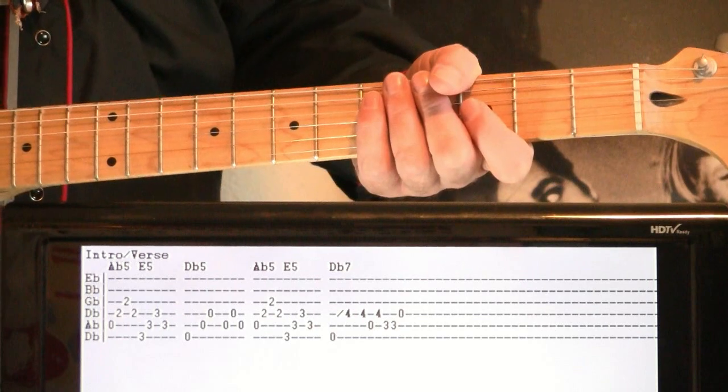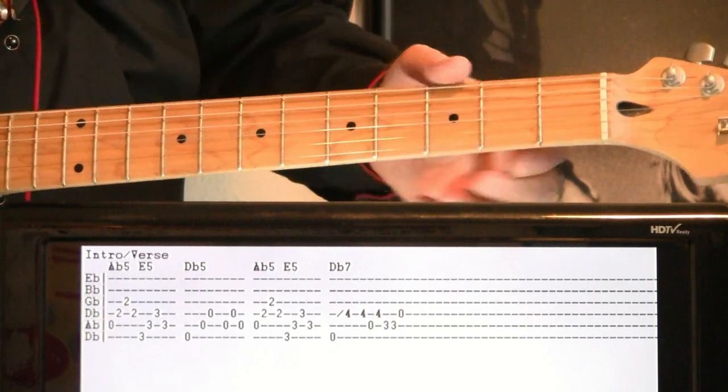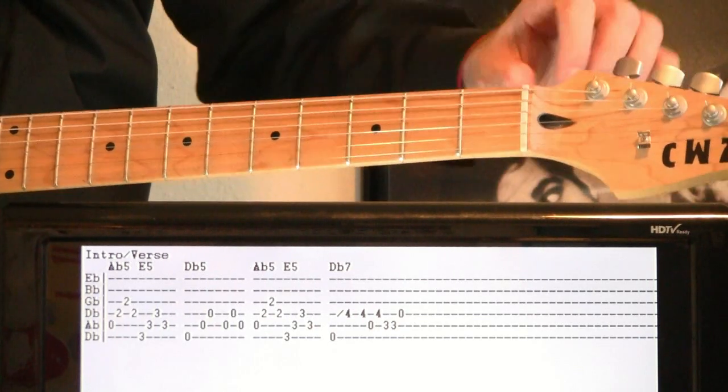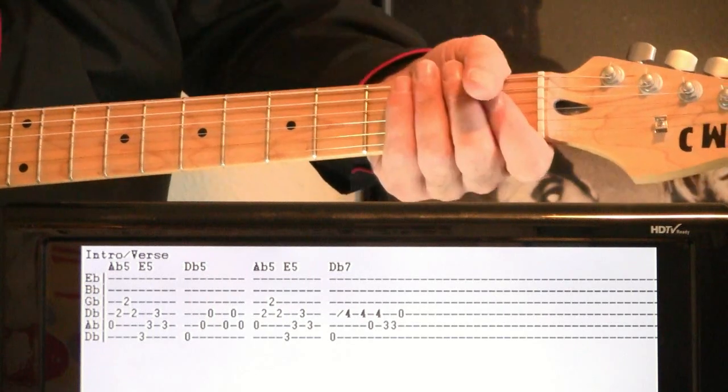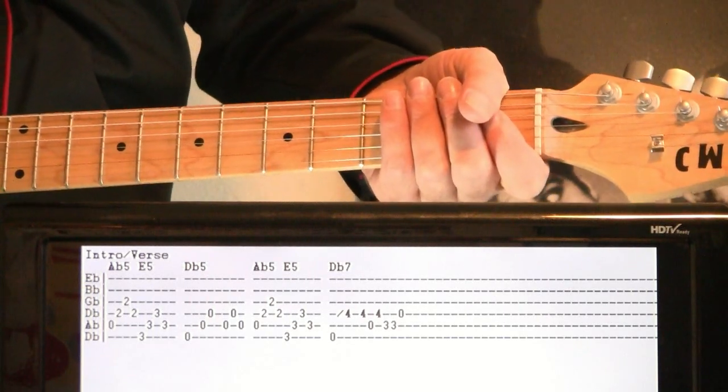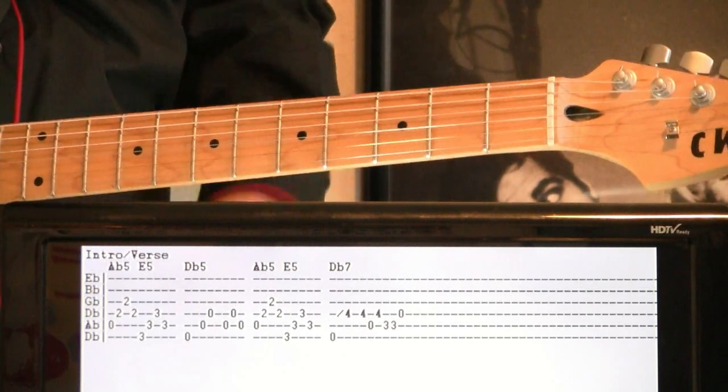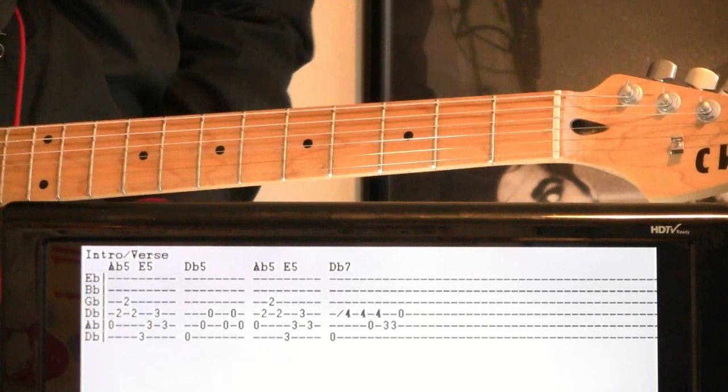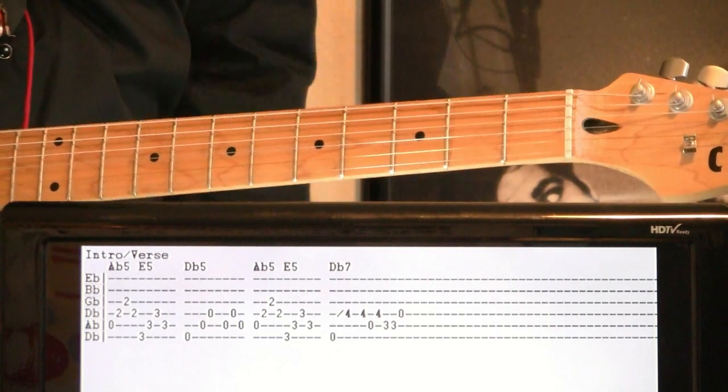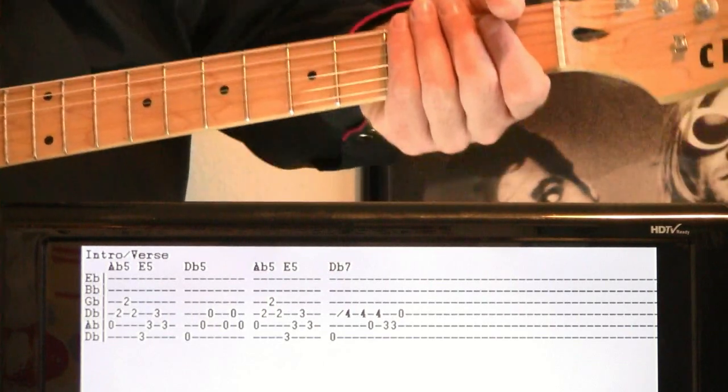So you just do your standard drop D - take the E down a whole step there, and then take every string another half step further. That's if you want to match the exact key of the recording. Otherwise you could probably just do a drop D tuning and everything would be cool, up to you.